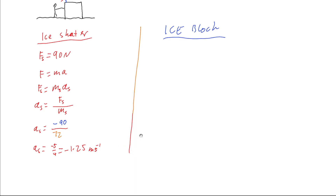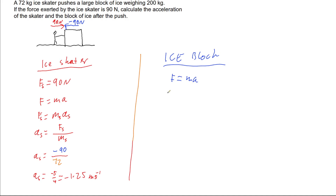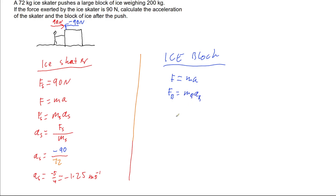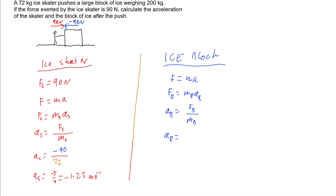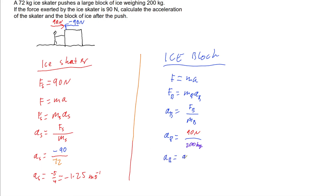Now we just have to do the opposite for our ice block. Looking at the ice block, force equals mass times acceleration, so the acceleration of the block is going to be the force on the block divided by the mass of the block. The force on the block is our 90 newtons applied by the ice skater, and we divide by the mass of that block, which is 200 kilograms. So the acceleration of our block works out to be 9 twentieths, or 0.45 meters per second squared.